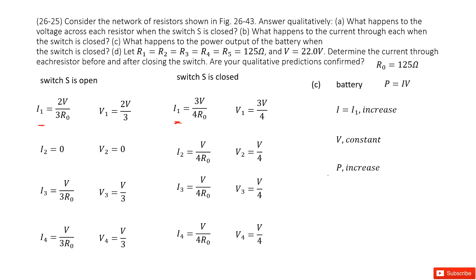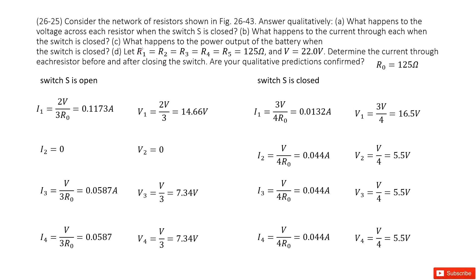Part D tells us R1, R2, R3, R4 equal to 125 ohms, that is R0, and V equals 22 volts. Determine the current through the resistors before and after the switches. Now we just input R0 and V in these functions and get all the values.